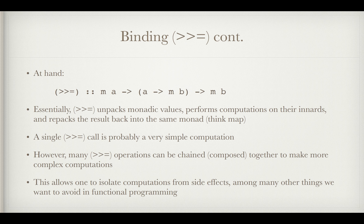So this function in the middle here that bind takes as a parameter just computes something with its input and then shoves it back into a monad and then bind gives you that monadic value back. So a single bind call is probably a pretty simple computation. However, many of them can be chained together, think functional composition to make arbitrarily complex computations. So pulling A up here outside of M and doing computations just on A kind of allows you to isolate the computations from its side effects and non-determinism, among other things we want to avoid in our functional programs.